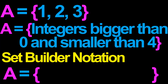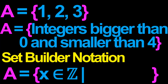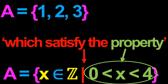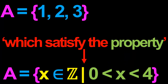We can write A as the set which consists of all the integers x which satisfy the following property: x is bigger than 0 and smaller than 4. The set A consists of those elements x which are members of the set Z, that is, the set of integers, and which satisfy the property that x is between 0 and 4. The vertical bar punctuation mark here just says that in order to be a member of A, x has to satisfy the property or properties listed to the right of the vertical bar.